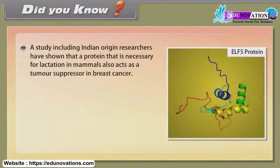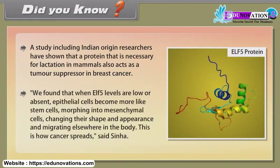Did you know? A study including Indian-origin researchers has shown that a protein necessary for lactation in mammals also acts as a tumor suppressor in breast cancer. Researchers found that when ELF5 levels are low or absent, epithelial cells become more like stem cells, morphing into mesenchymal cells — changing their shape and appearance and migrating elsewhere in the body. This is how cancer spreads, said Sinha.